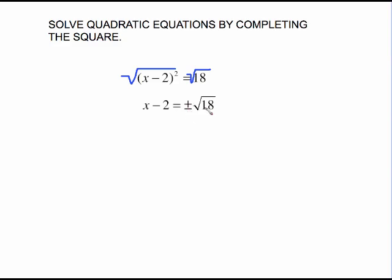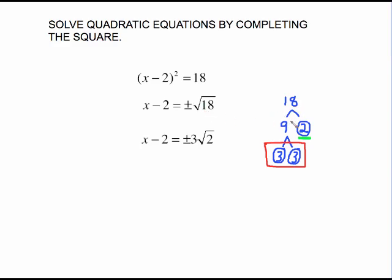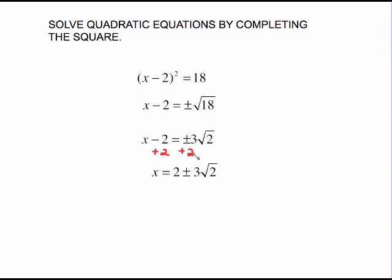Now you look at the square root of 18, and that is something that simplifies with a factor tree. We have a pair of 3's, so a 3 is coming out with a 2 staying in, and of course the plus or minus is still there. We need to solve by adding 2 to both sides. Be careful — 2 plus 3 root 2 doesn't combine to make 5. These are not like terms. This is your final solution.